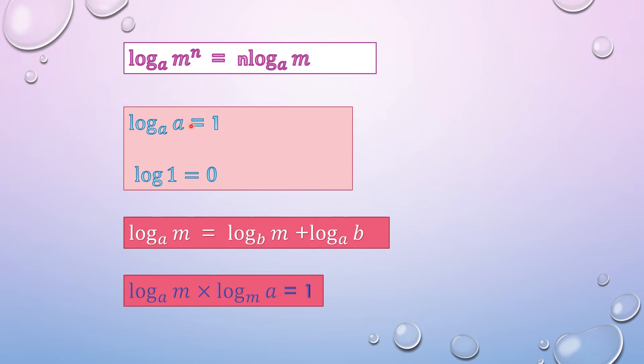Next formula says log of a to the base a is 1. If these two are same, it could be log of x to the base x is also 1. So log of 10 to the base 10 is 1. Now log of 1 is considered 0.